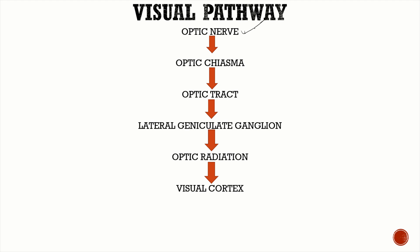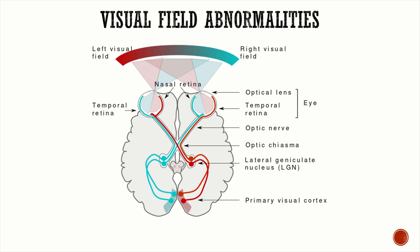For viva questions on the visual pathway: optic nerve → optic chiasma → optic tract → lateral geniculate body → optic radiation → visual cortex. Regarding visual field abnormalities: images from the left visual field fall on the nasal retina, and from the right visual field on the temporal retina. A lesion of the optic nerve causes loss of the entire visual field on that side.